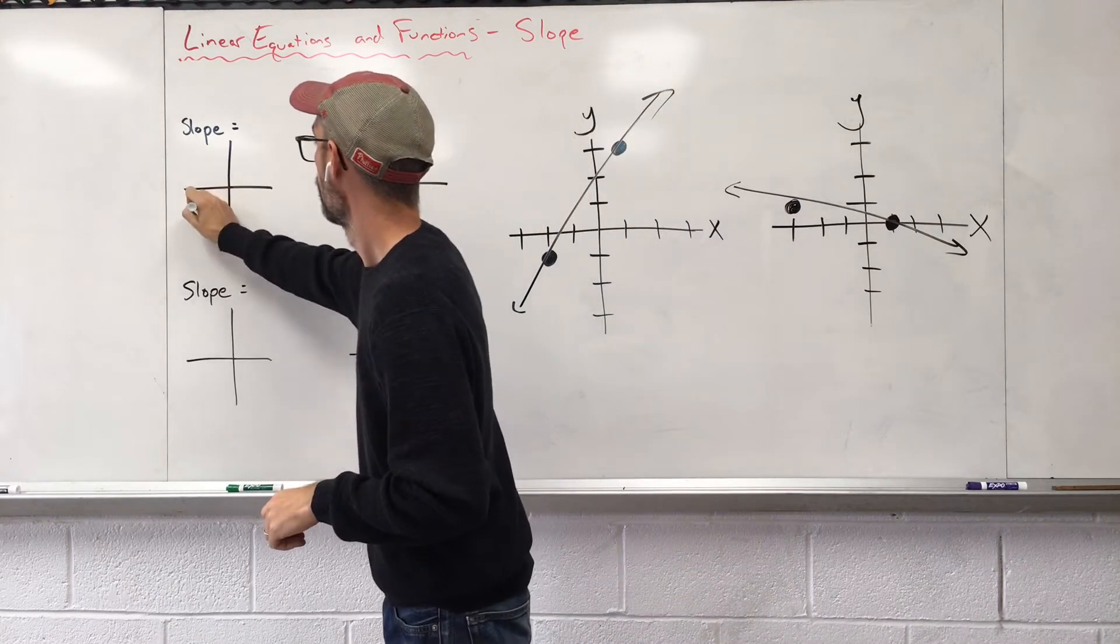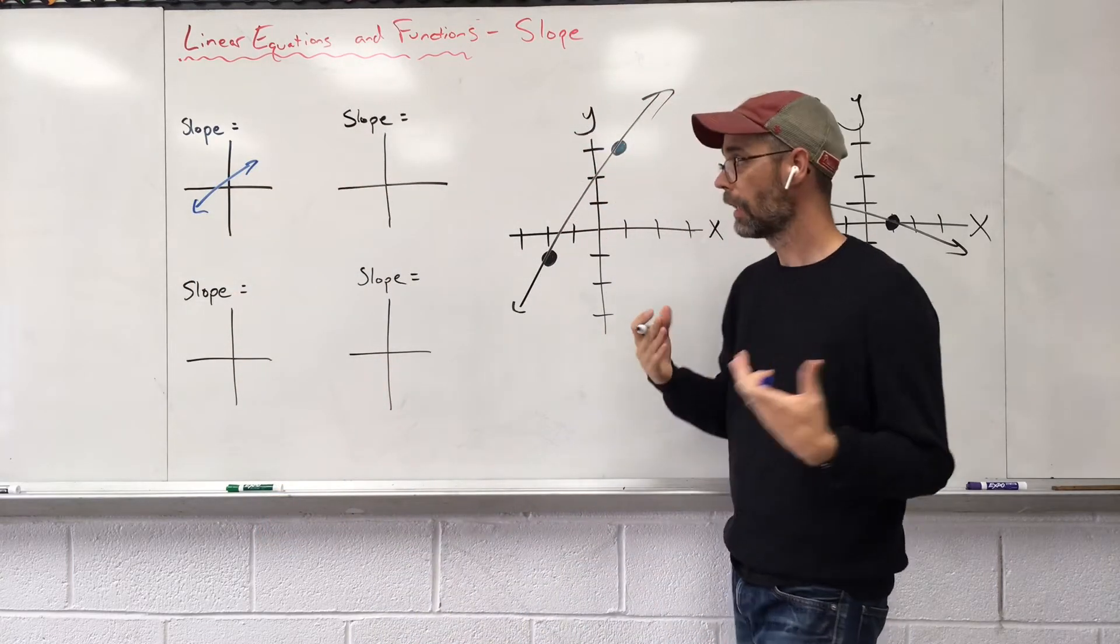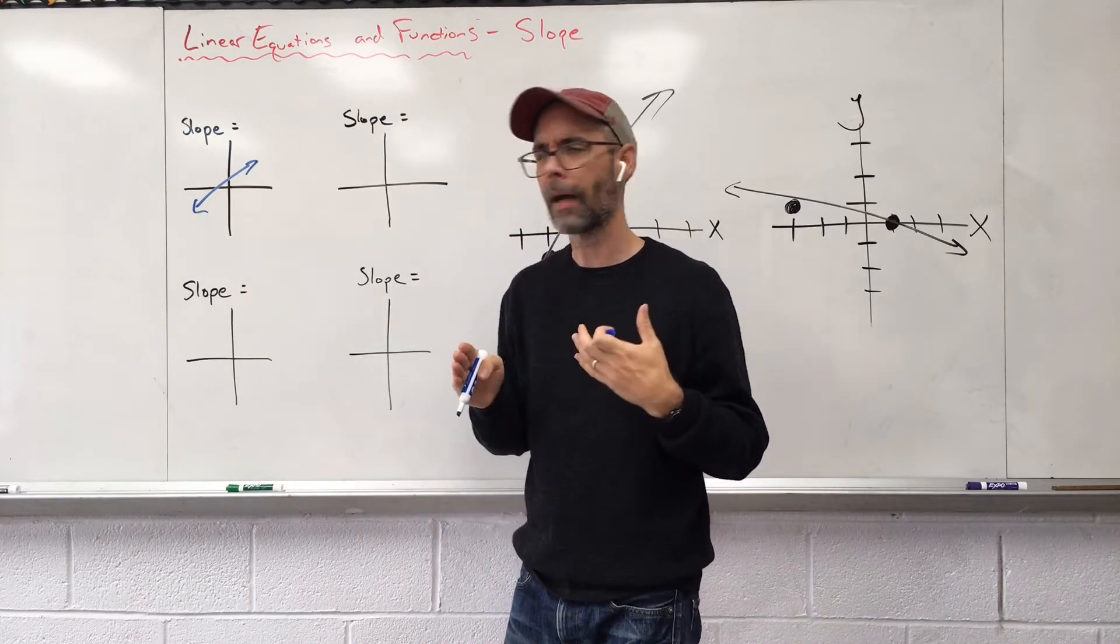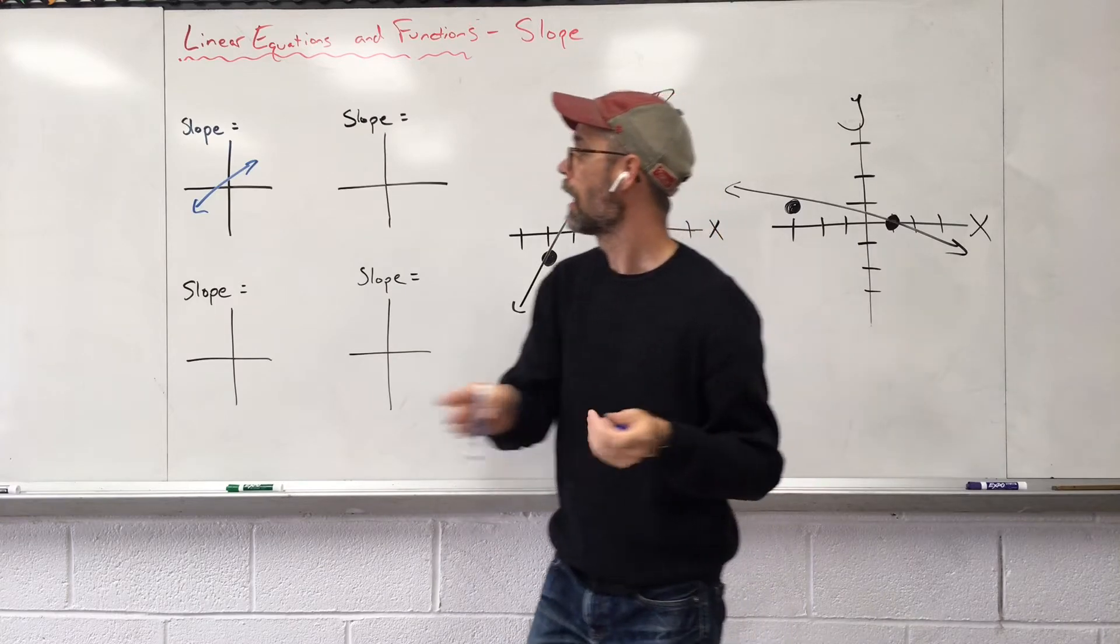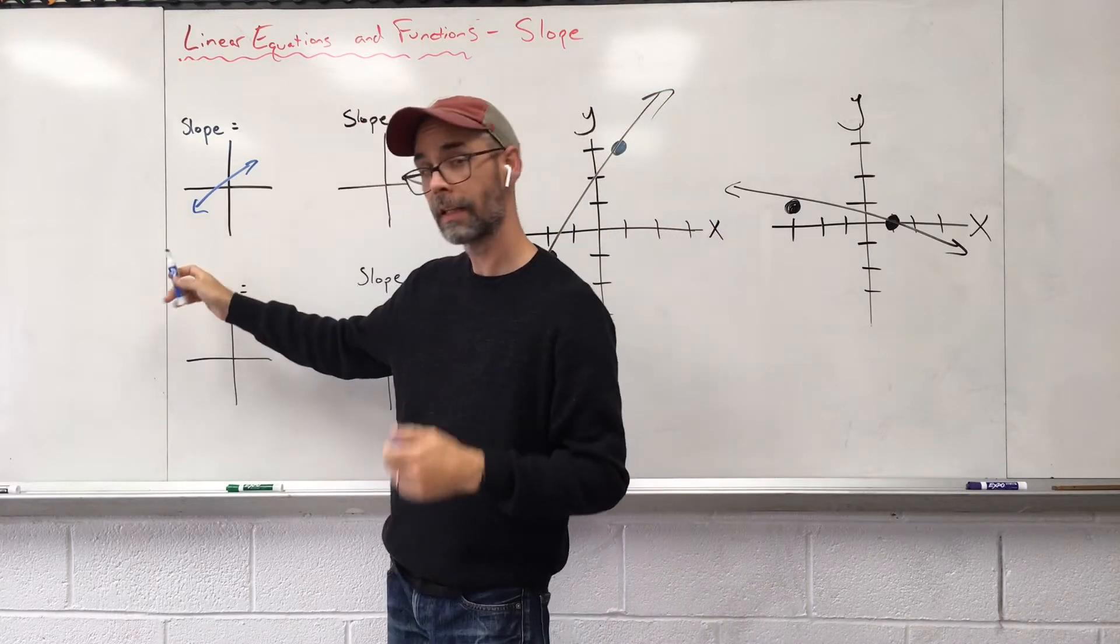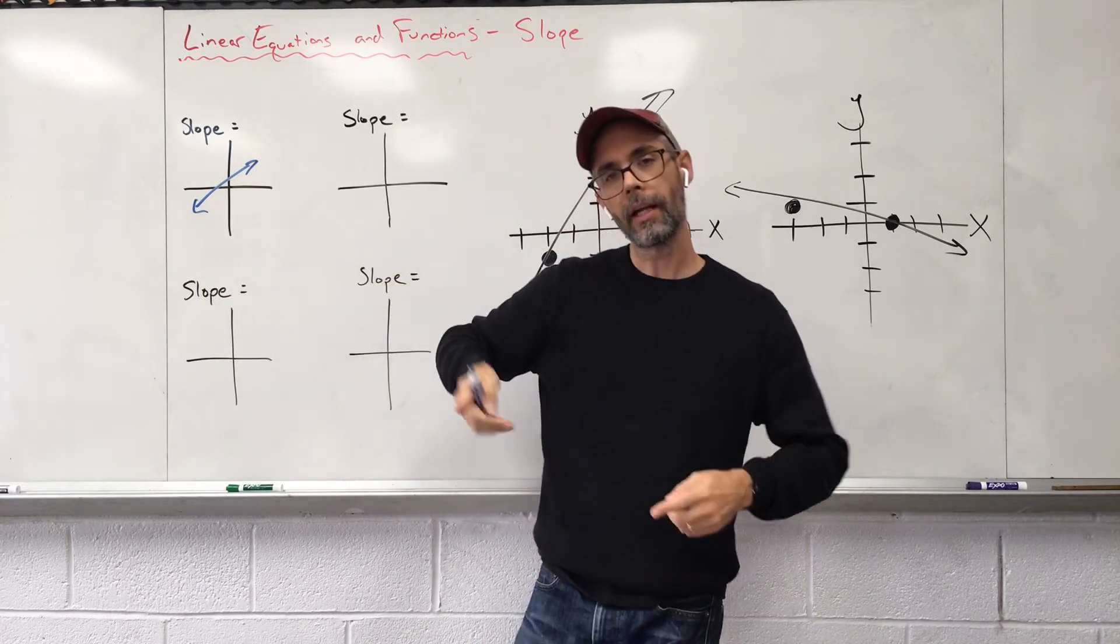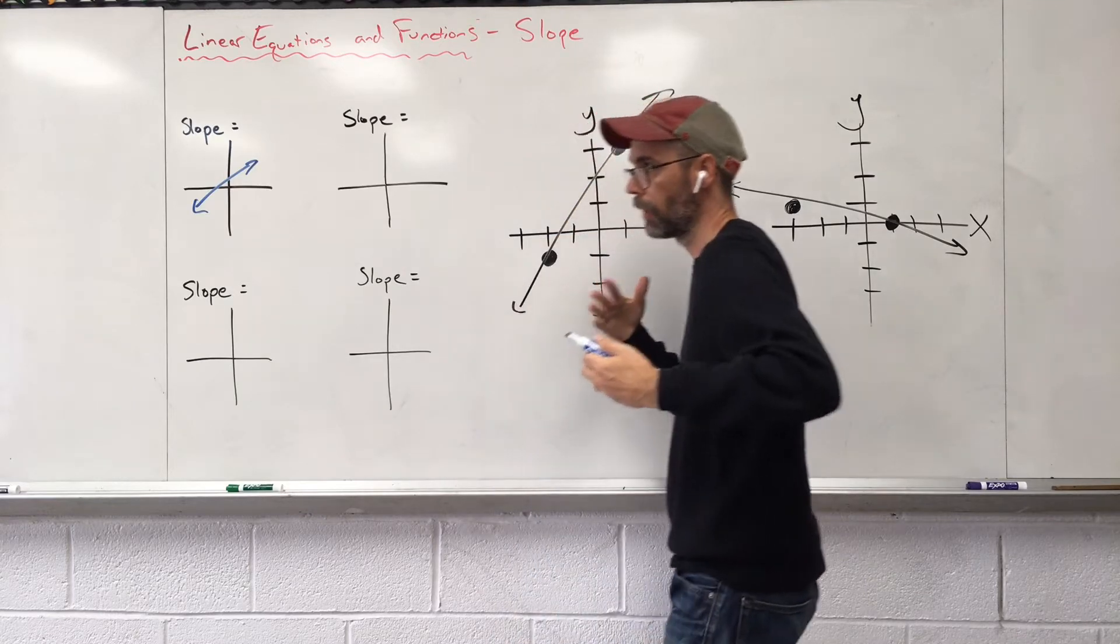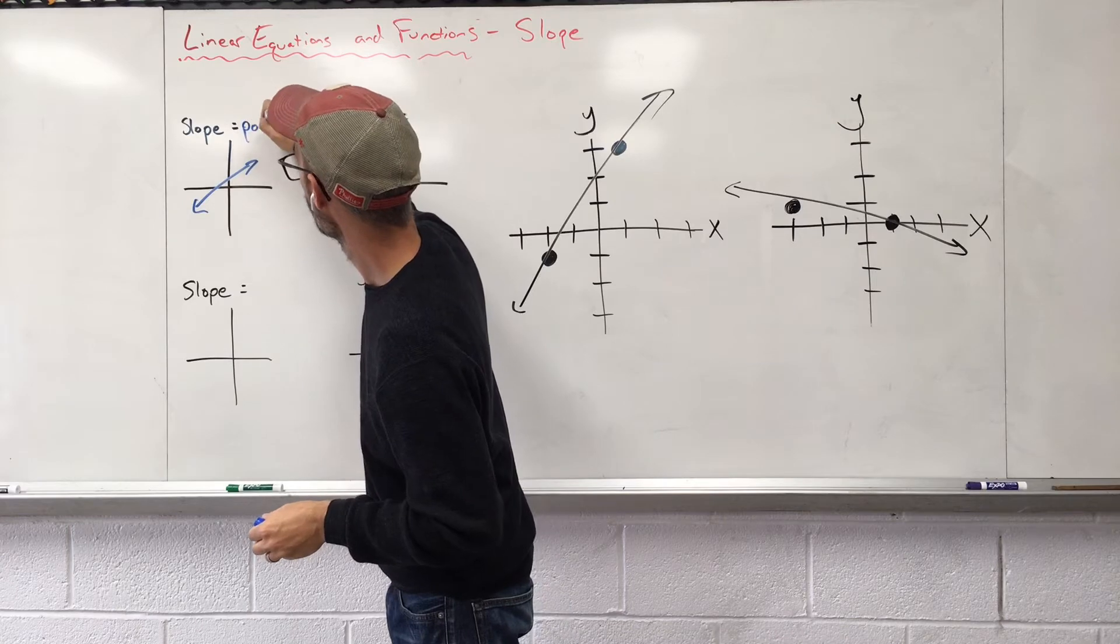We could have different straight lines within a graph. When I read my graph, I want to go from left to right, like you're reading a book. If I'm reading this line moving to the left, does that line go up or does it go down? It's like you're actually going up a hill. If something is going up, we say that it has a positive slope.